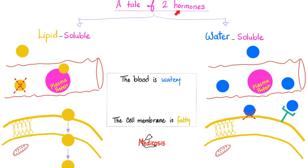This is the story of two hormones: lipid soluble versus water soluble. If you're lipid soluble, the receptor is inside the cell. If you're water soluble, you cannot cross the lipid bilayer, and therefore the receptor is placed on the outside.